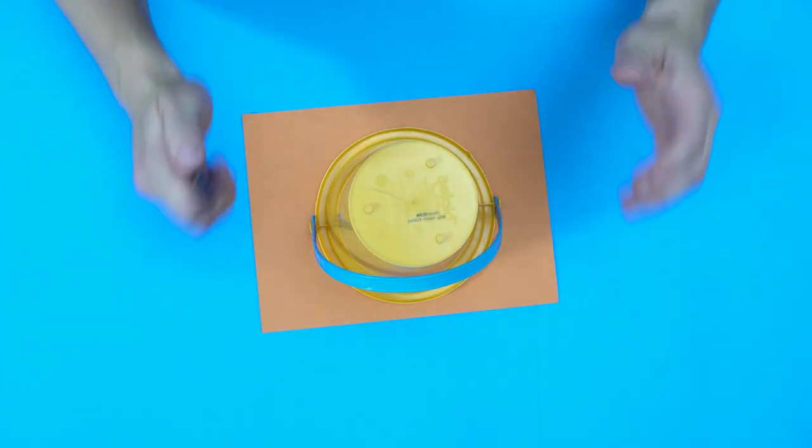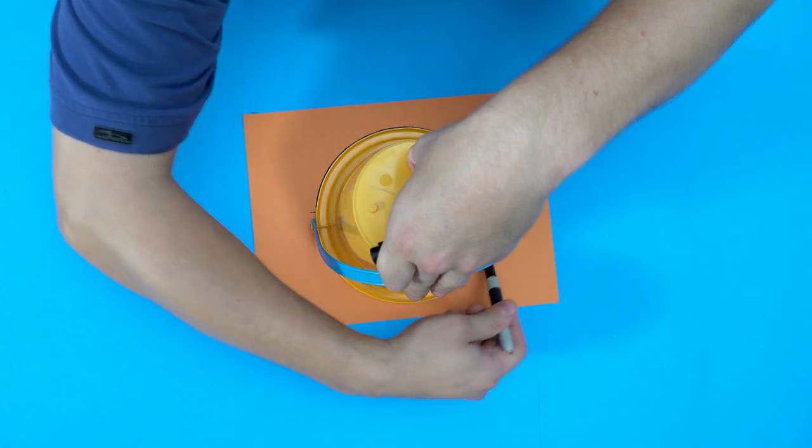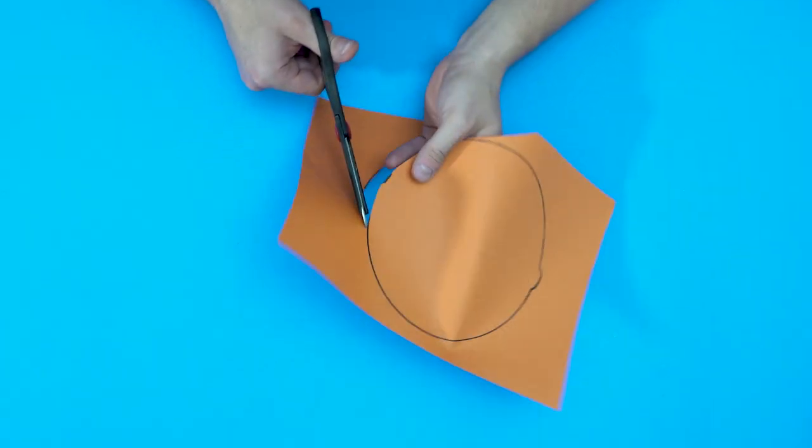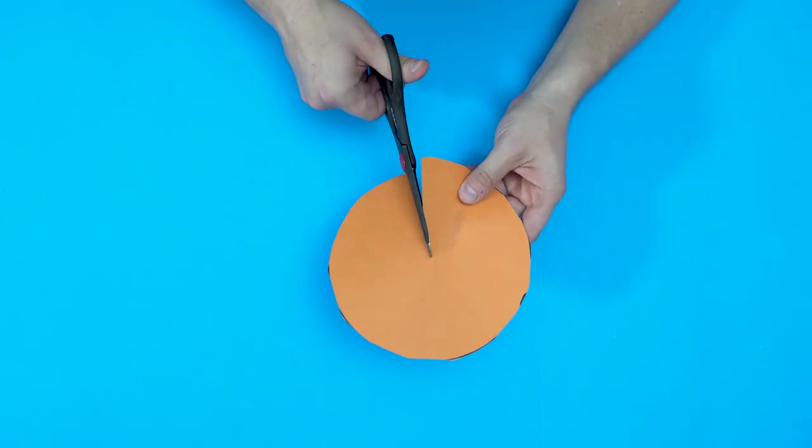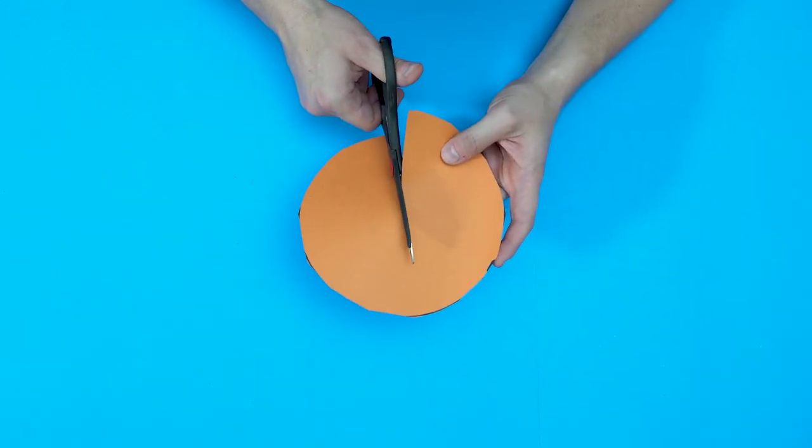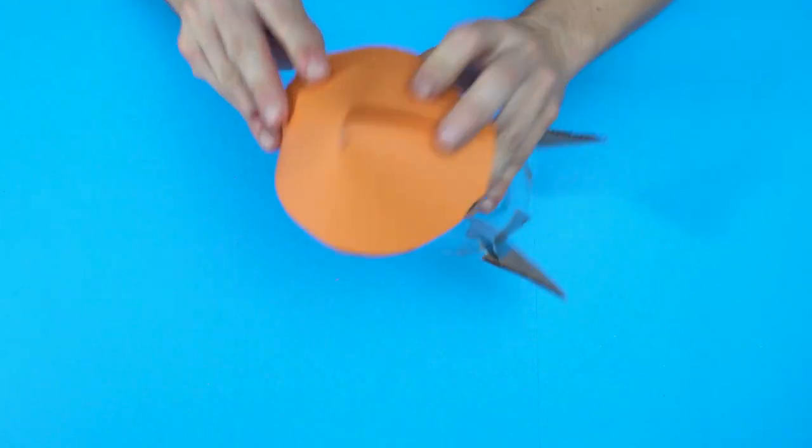All right, now it's time to make the nose cone. I found something that's a circle. Quickly trace around it, and I'm going to end up cutting it into a circle here. Then, you're going to want to cut up about halfway or just a little bit more, so that's going to allow me to fold this into a cone shape.